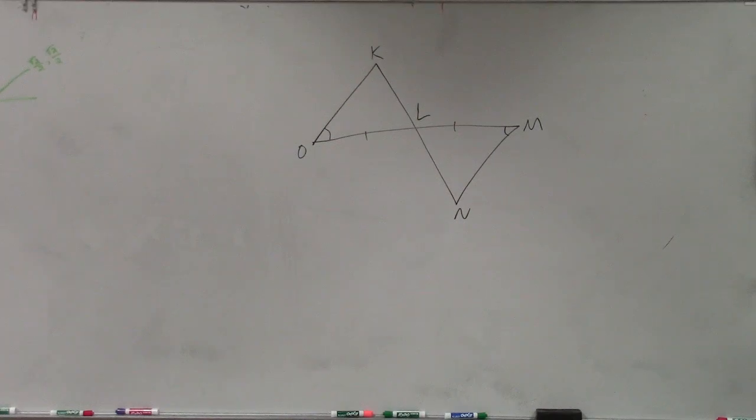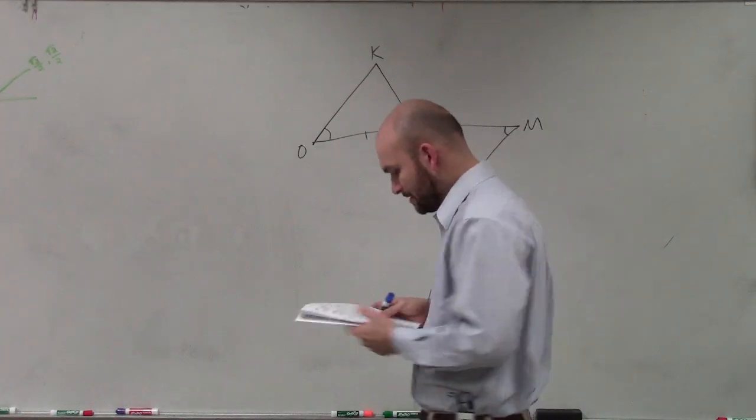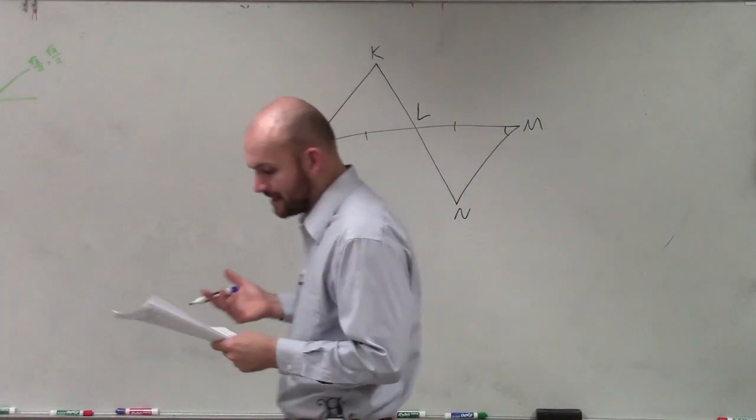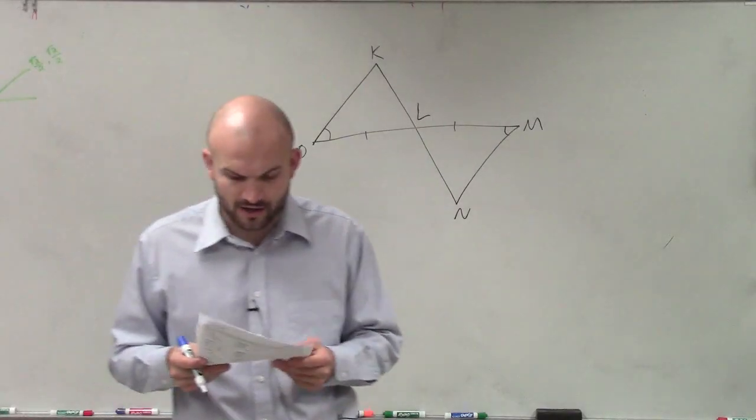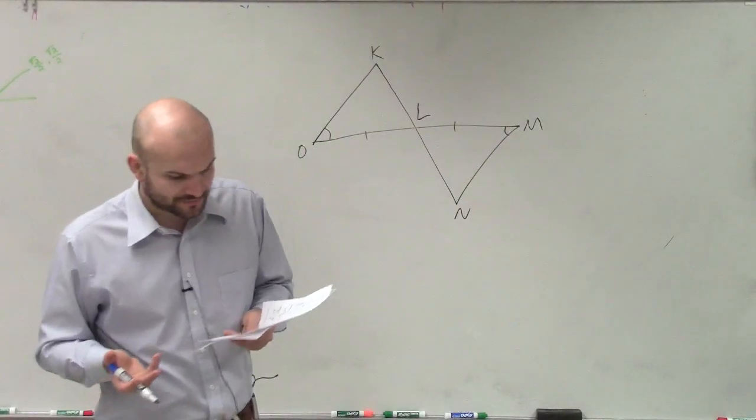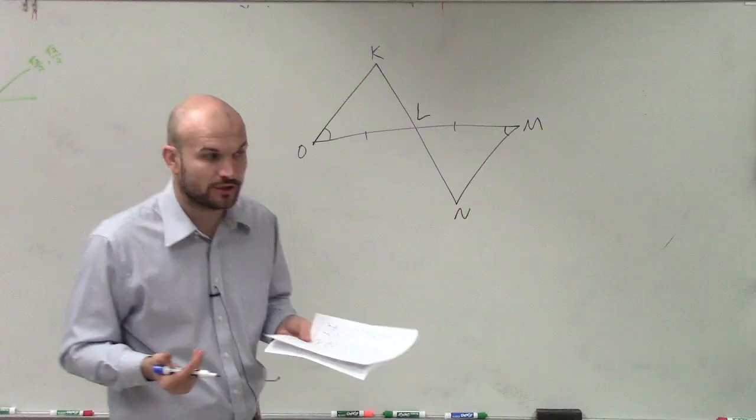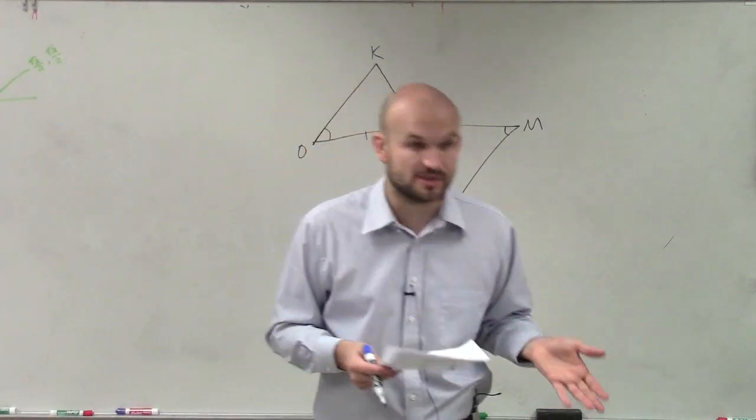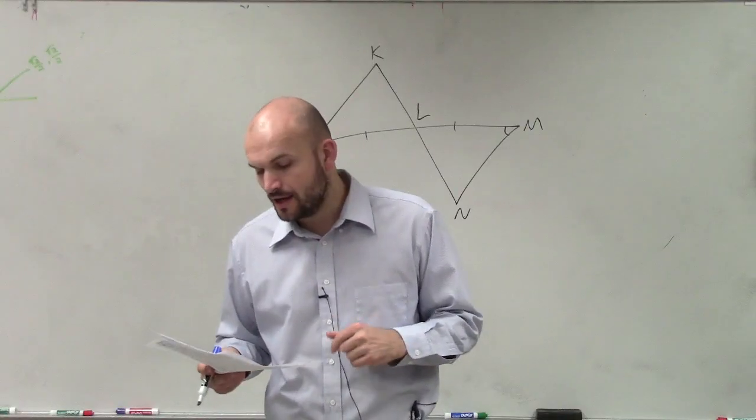When you guys are looking at this problem, number 13, what we're trying to do is fill it in. But it already says proving angle K is congruent to angle N because congruent parts of congruent triangles are congruent. So CPCTC. That's what that means. Congruent parts of congruent triangles are congruent.